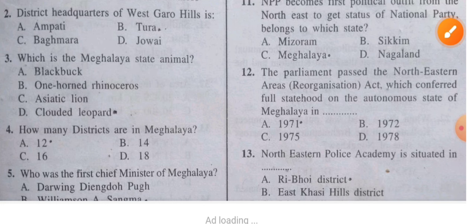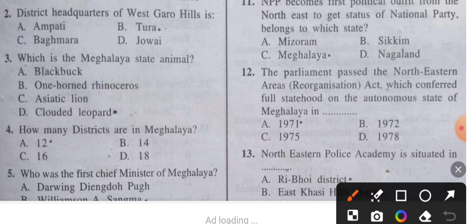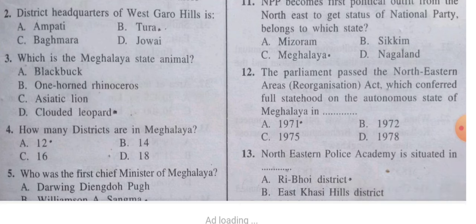Question 12: The Parliament's Northeastern Areas Reorganization Act, which conferred full statehood on the autonomous state of Meghalaya, was passed in which year? The answer is 1971.